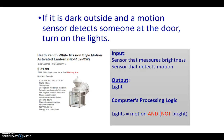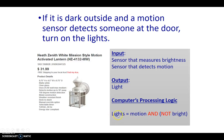The input is a sensor that measures brightness and a sensor that detects motion. The output again is a light bulb. The computer's processing logic says: if the sensor indicates it is not bright outside and there is motion outside, then the light bulb should come on. So that's the computer's processing logic for this two-input system.